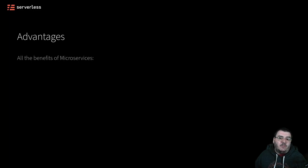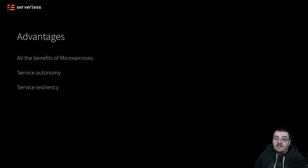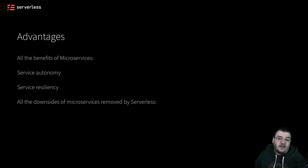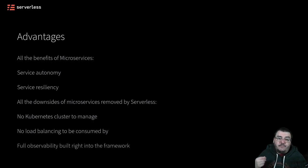So what advantages does this give us? First of all, we get all the benefits of microservices — service autonomy and service resiliency. Because of the event-driven asynchronous nature of maintaining state within services, there is massive resiliency even if other services go up and down. Maybe if you push buggy code in one service, there are no hard dependencies by other services that require that service to always be up. If a service needs to go down for maintenance, you can do that. You're making sure you're not going to break your entire application if you push a change that breaks one of them. And all the downsides of microservices are essentially removed by serverless — no Kubernetes clusters to manage, no massive infrastructure, no load balancing to worry about. You also get full observability built into these services by the Serverless Framework.